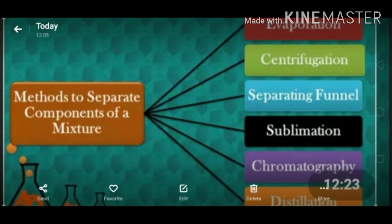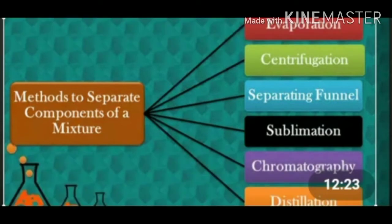Separating the components of a mixture: Most naturally occurring substances are not chemically pure. Different methods are used to get individual components from a mixture. The separation of components is necessary to get pure and useful components. Heterogeneous mixtures can be readily separated by simple physical methods such as hand picking, sieving, sedimentation, decantation, and filtration. Sometimes special techniques must be used for separation.